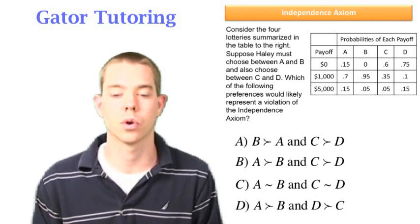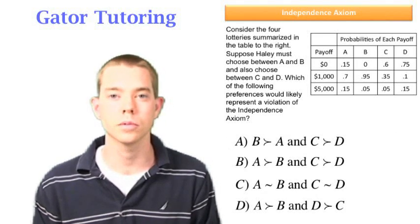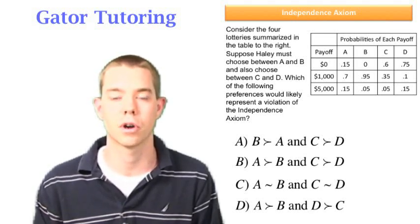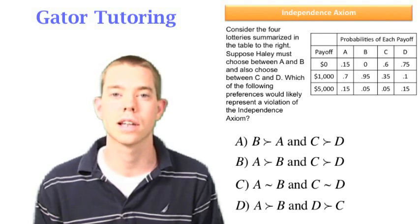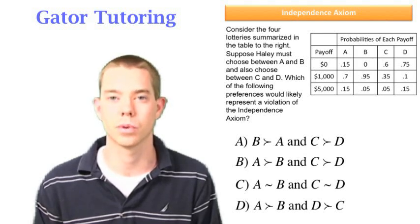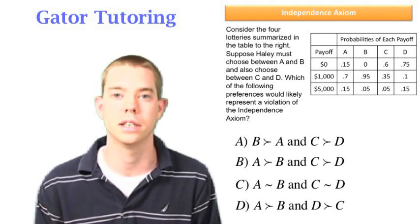We'll also look at our answer choices and see which ones are wrong. Option A says we do prefer B to A and we prefer C to D. Well, this is consistent with our expected utility model. This is likely to represent somebody who's very risk averse. We notice that gambles B and C are the less risky gambles when compared to A and D.